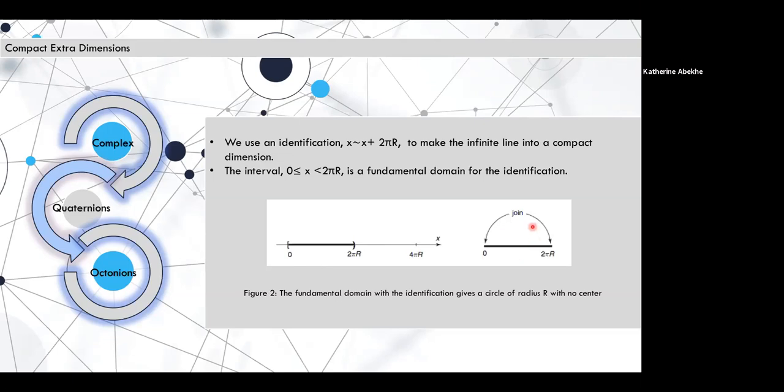Now this is the same story in more than one dimension. We can choose to apply an identification to compactify only one dimension. We can do it to two dimensions, as many as we want. And in our world, we're saying that we live in a world of six compact extra dimensions.